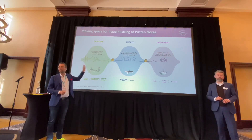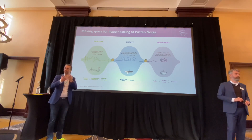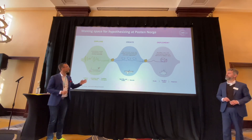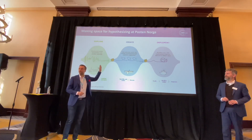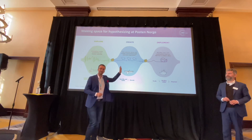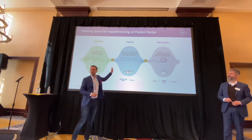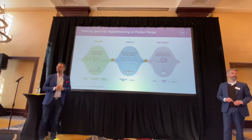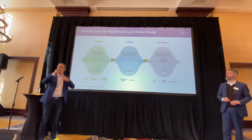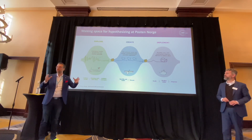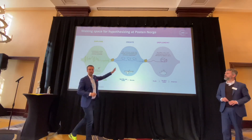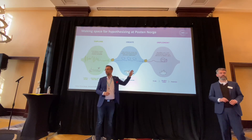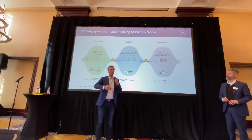Then we build prototypes to see if we can make a system, an app, a website, or a search that fixes that problem. We used to have five business cases you had to go through with gates and economics — now we use the Lean Canvas, which is a one-page description. We iterated on the prototype, and once it works, we go into the creation phase where we build the Minimal Viable Product and run a pilot.